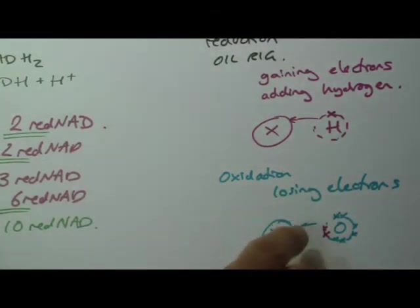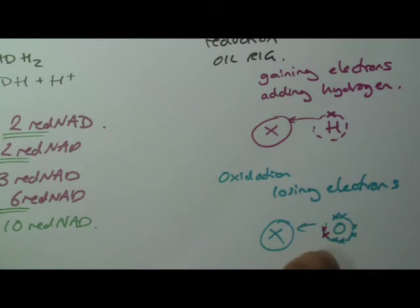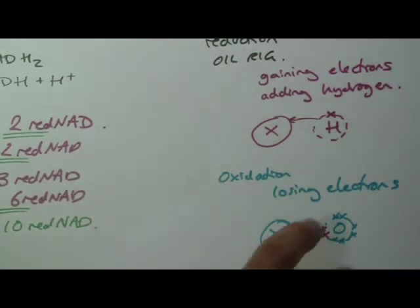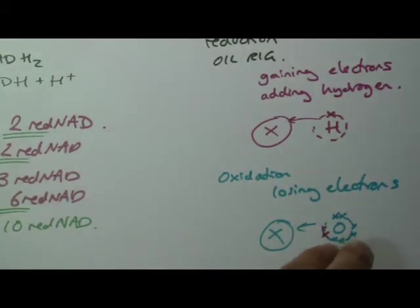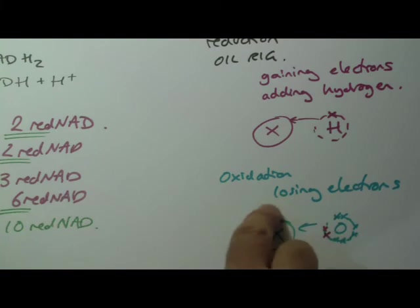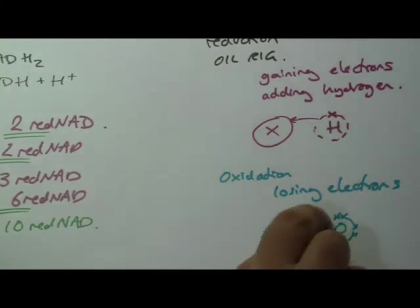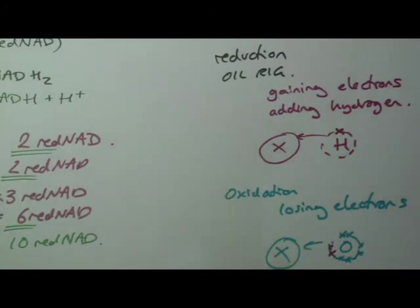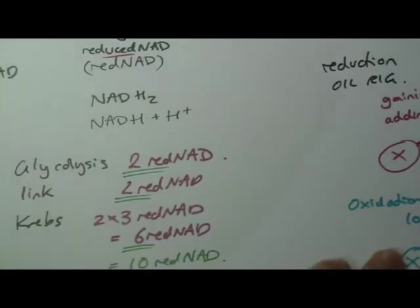When this reaction was first discovered, they thought it was only oxygen that could do it. It later turns out that other elements can do it as well, but the name unfortunately stuck. So oxidation doesn't actually have to have anything to do with oxygen at all. We'll blame the chemists for this one. I know it gets confusing, but just think of oxidation as losing electrons. It will become more important and a bit clearer when we get into the electron transport chain, which is what we'll get to in a second.